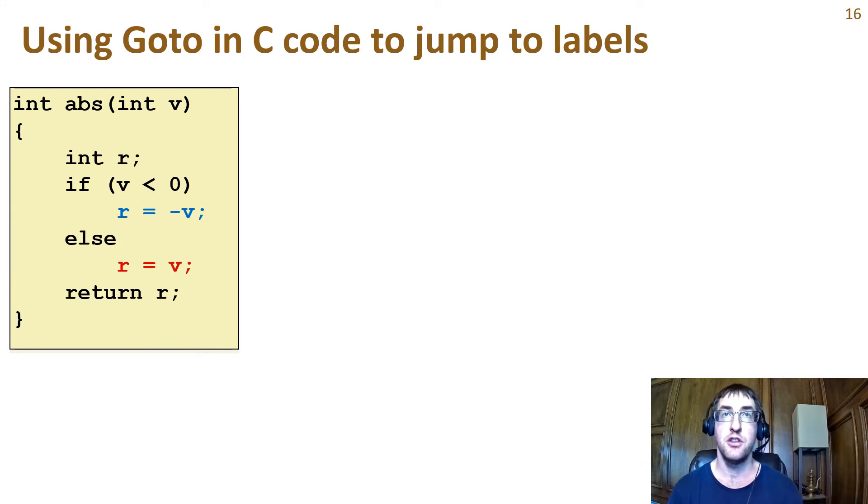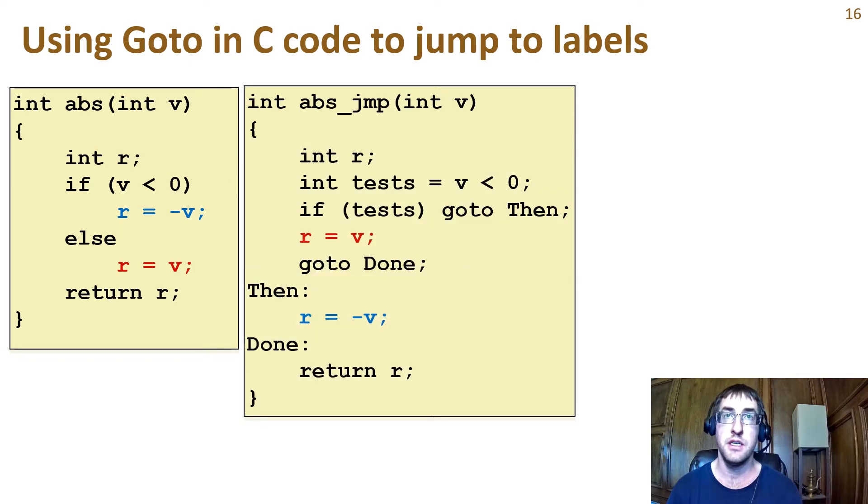Before we discuss loops, let's look at some simple C language transformations that get control flow code closer to the assembly equivalent. This will make our comparisons between high-level and assembly easier. Here is an if-else version of our absolute function. We can transform this to a goto version by using the logic of the test and using it to jump to the then part. If the jump isn't taken, then the else becomes the fall-through code. Now we can generate assembly that looks almost identical to the C code.